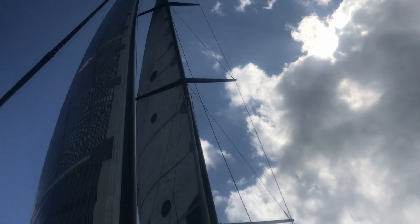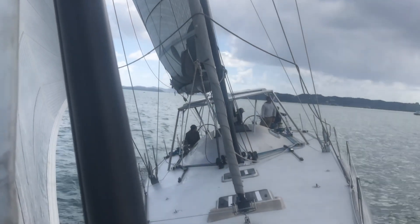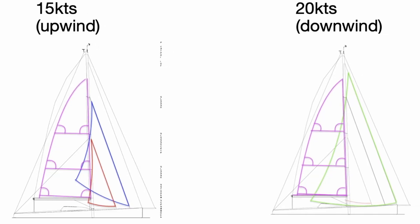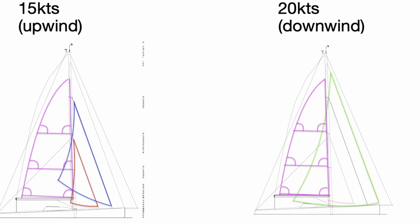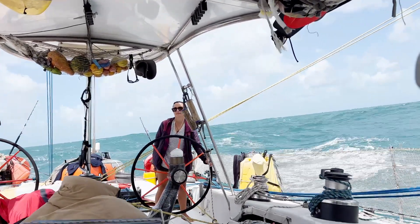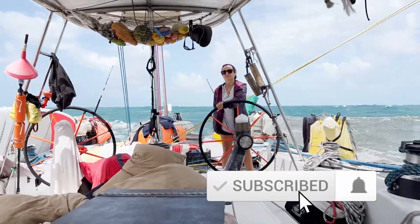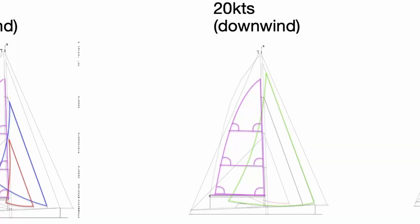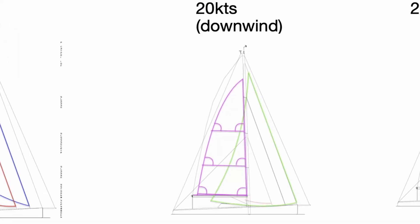The sail configurations are chosen to match the prevailing wind conditions. When sailing upwind, we aim to keep the center of effort — the point where the force of the sails acts — balanced near the boat's center of lateral resistance, which is typically close to the keel. When sailing downwind, we shift more sail area forward to improve directional stability and reduce the risk of broaching.